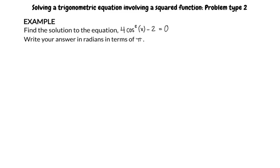Find the solution to the equation 4 cosine squared x minus 2 equals 0. Write your answer in radians in terms of pi.